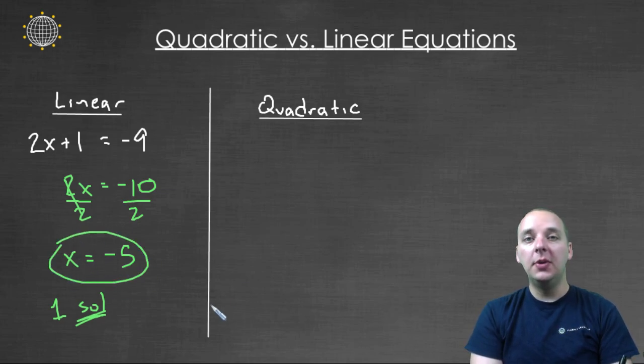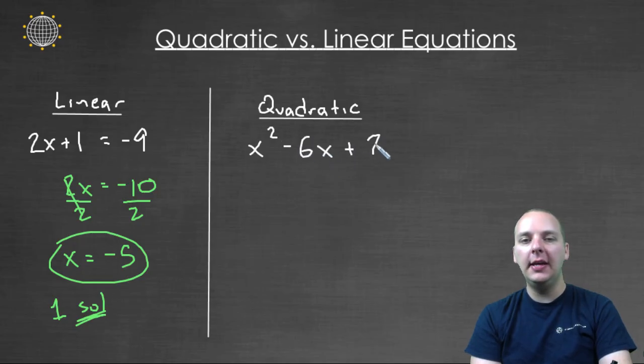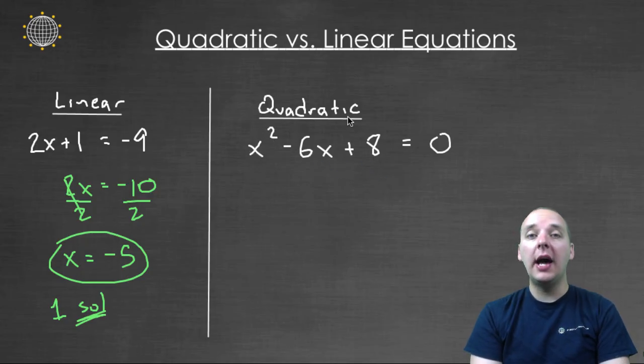Now quadratic equations are going to be much, much different. It's an entirely different approach, and let me illustrate why. Let's say you had, let's say x² - 6x + 8 = 0. So this is an equation, has an equal sign, but instead of just being linear, like this, it actually has a squared term, which makes it a quadratic equation.